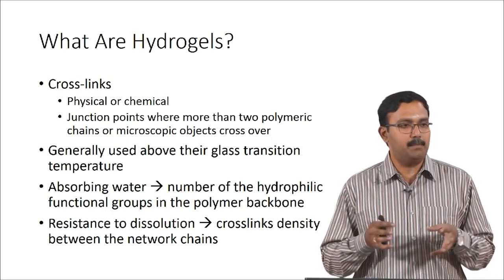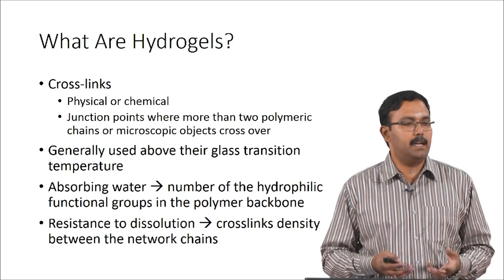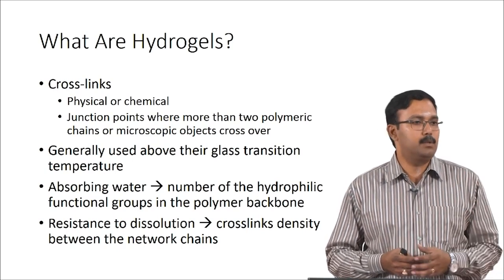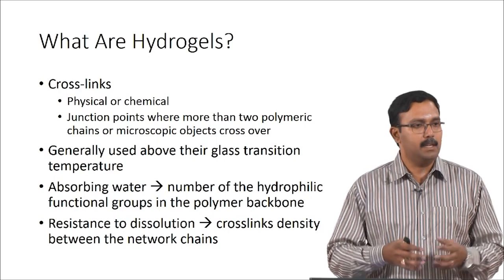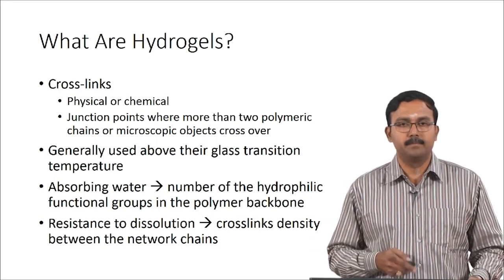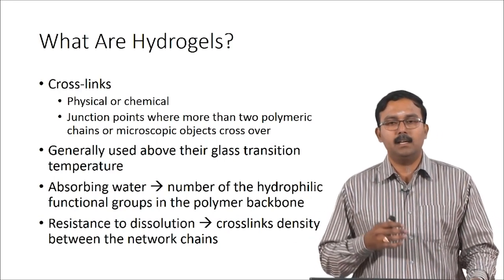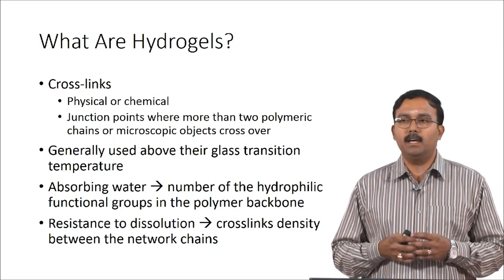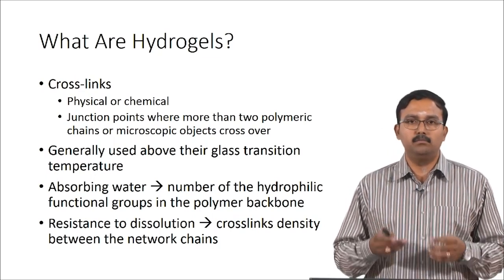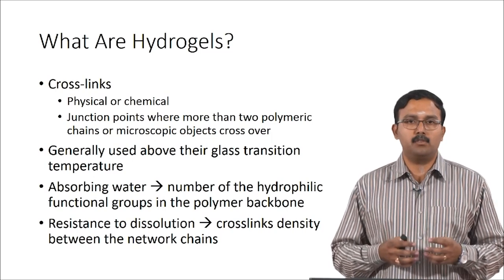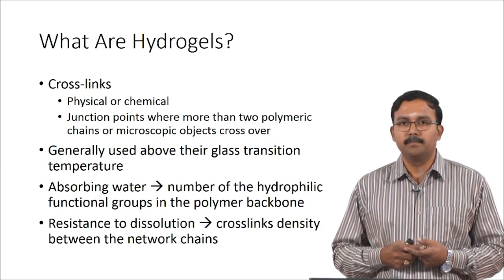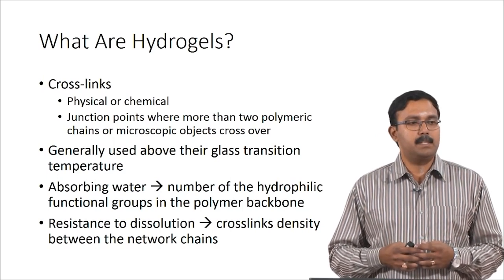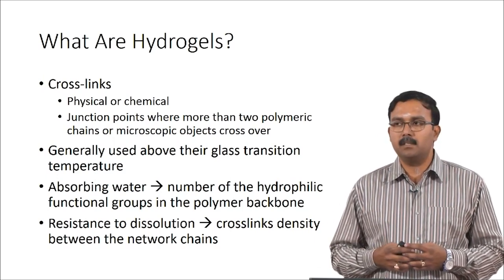Crosslinking is one of the major aspects when it comes to creating hydrogels. It depends on the polymer you are using, and there are different types of crosslinking. Crosslinks are physical or chemical — these are technically the junction points where two polymeric chains or microscopic objects cross over. Hydrogels are generally used at a temperature higher than the glass transition temperature.